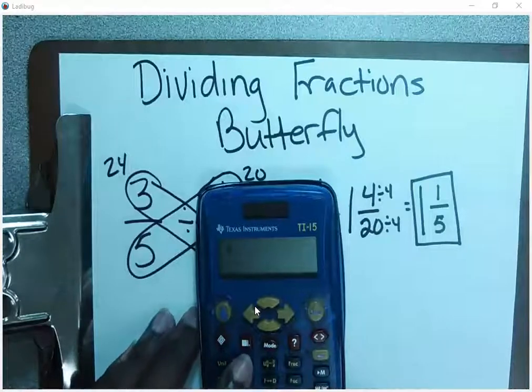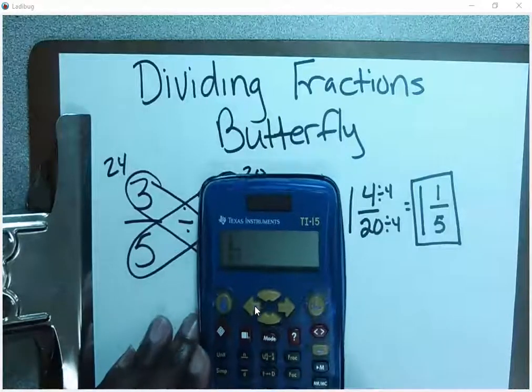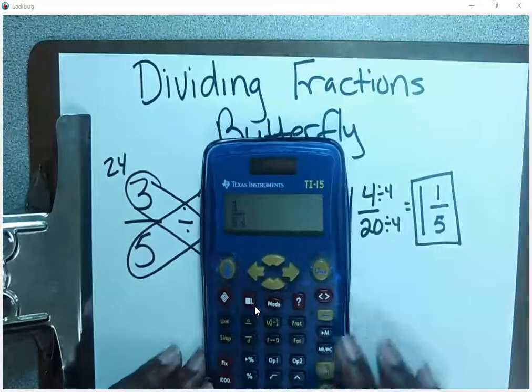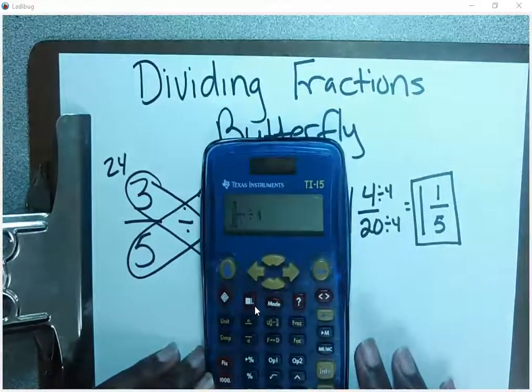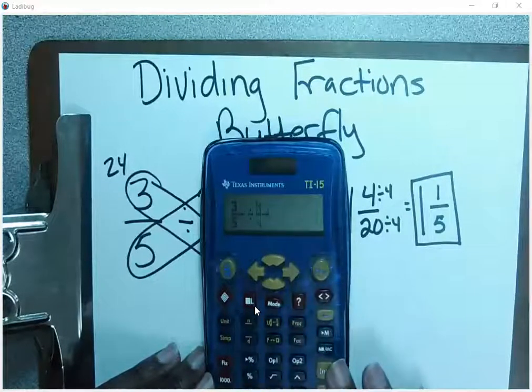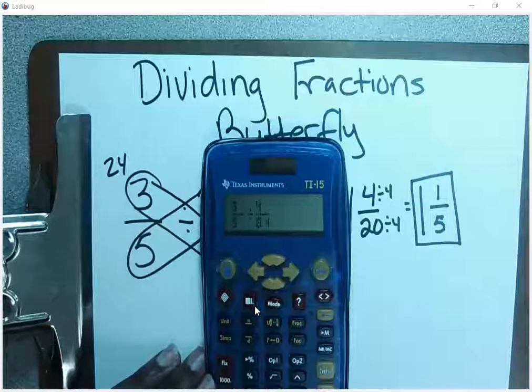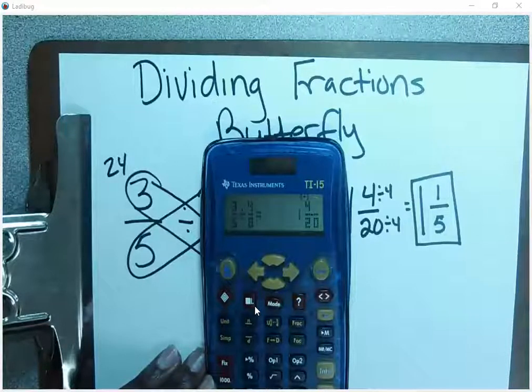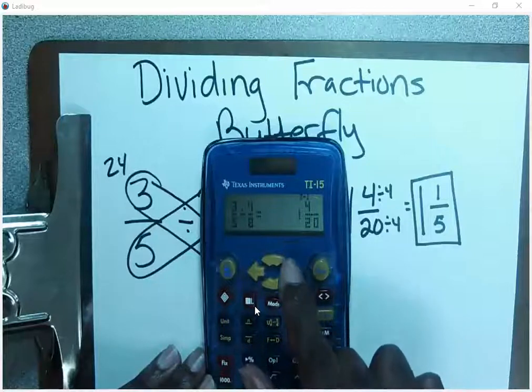So I have three numerator five, and then I have divided by four numerator eight. That's how you put fractions inside the calculator. You hit enter. And once again, you get one and four over 20.